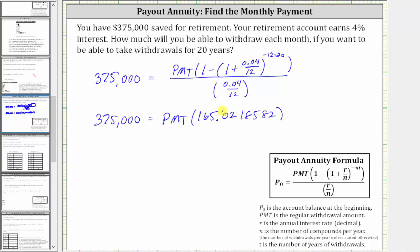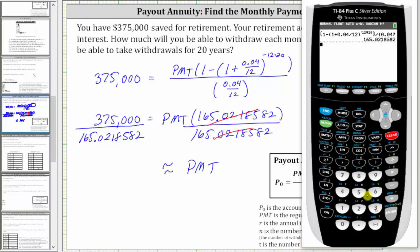And now to solve for PMT, we divide both sides of the equation by 165.0218582. On the right side of the equation, this quotient is equal to one. PMT times one is PMT. PMT, the regular withdrawal amount, is equal to this quotient, which we will now evaluate and round to the nearest cent. We have 375,000 divided by 165.0218582.